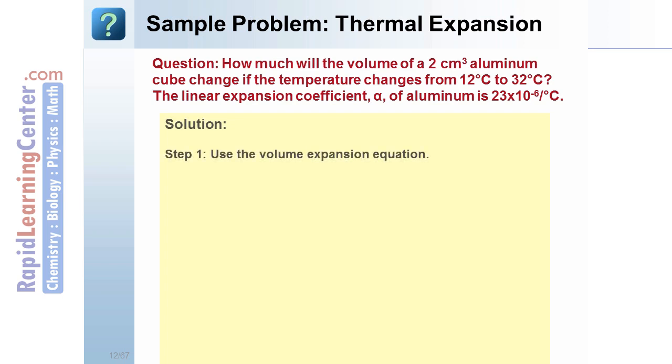For our solution, we may need several steps. We will definitely be using the volume expansion equation since this problem talks about volume. However, we might first want to find what delta T is. In this example, we go from 12 to 32 degrees Celsius. That's a change of 20 degrees.